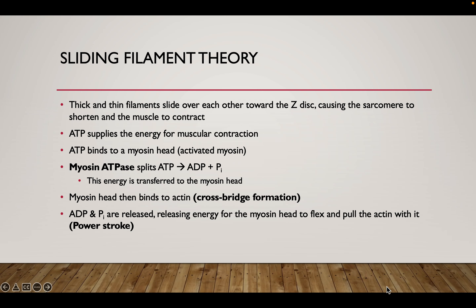Welcome back. We're now going to talk about the sliding filament theory of skeletal muscle contraction. This theory is named in part due to the action which the myofilaments undergo and how they move to produce our large-scale muscle contraction. Our myofilaments — our actin and myosin — are going to be moving and sliding across each other.